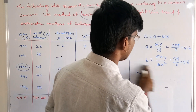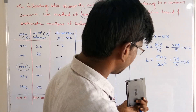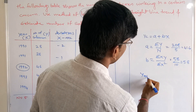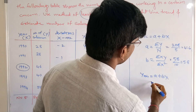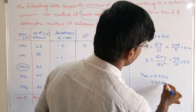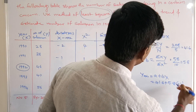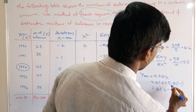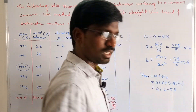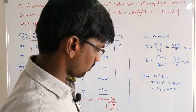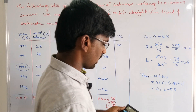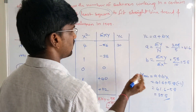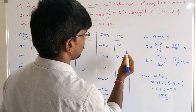The trend value for 1991: x = -1, so yc = 41.6 + 5.8 × (-1) = 41.6 - 5.8 = 35.8. The trend value of 1991 is 35.8.